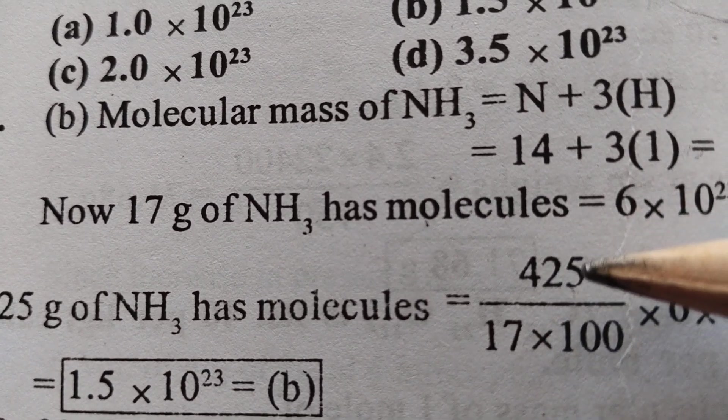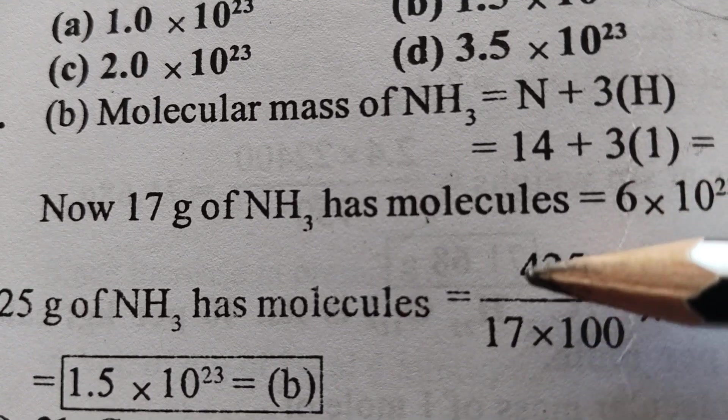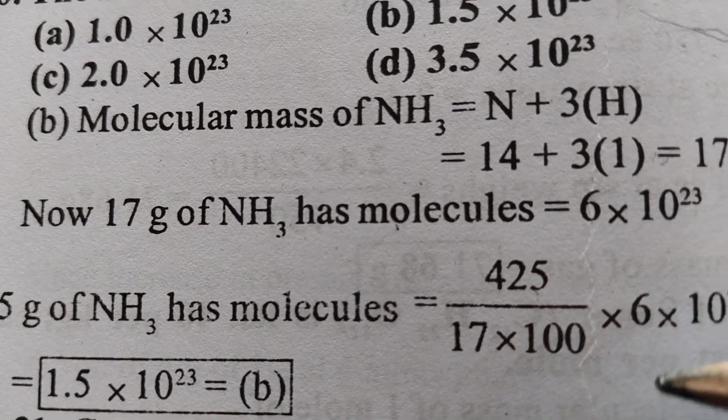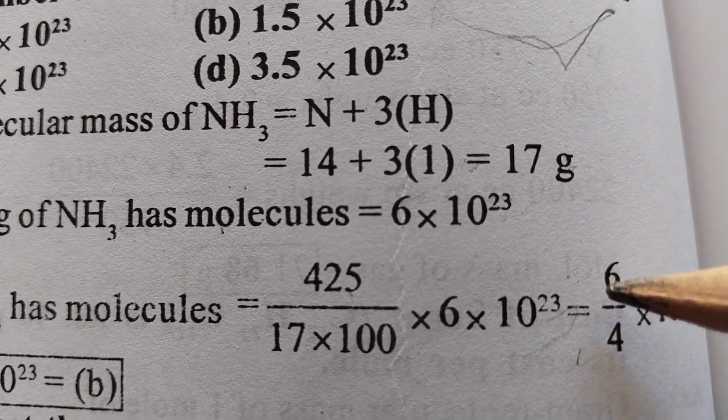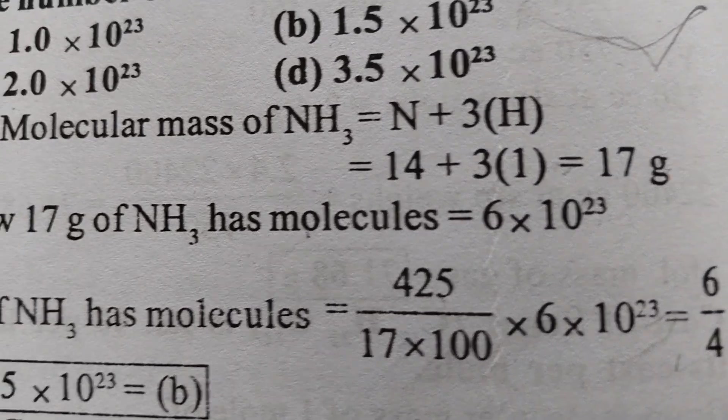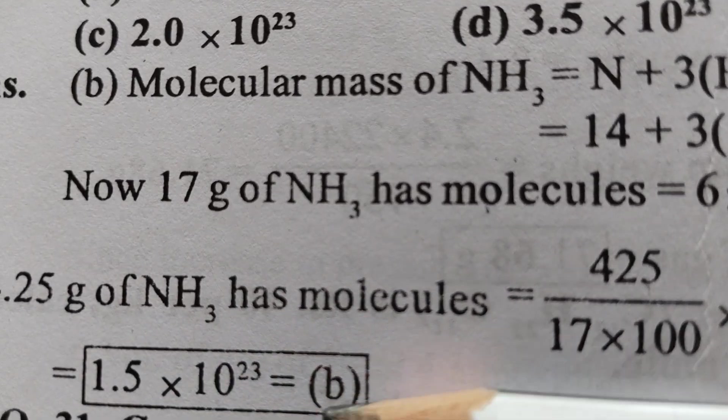If you multiply the numerator with 100, what happened? Point removed. 425/(17 × 100) × 6 × 10²³, that is 6/4 × 10²³, that is 1.5 × 10²³. The right answer.